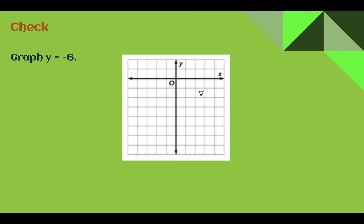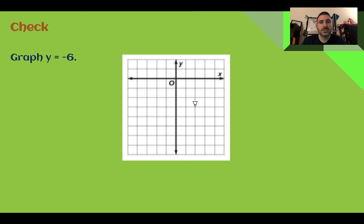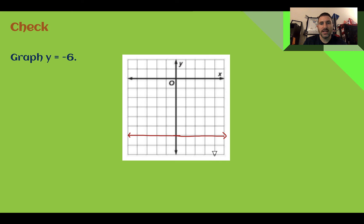Check your understanding: Graph y equals negative six. Pause the video now and complete the check. Check your answer. Your graph should be a horizontal line — there's zero x — and it should be down six. I'm marking at down six and drawing my line with arrowheads showing that it keeps going in both directions.